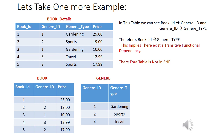Let us understand with one more example. This is the table named Book Details, having attributes: Book ID, Genre ID, Genre Type, and Price. Book ID determines Genre ID, and Genre ID determines Genre Type — therefore Book ID determines Genre Type. This implies there exists a transitive functional dependency, and since there is a transitive functional dependency, the table is not in 3NF.